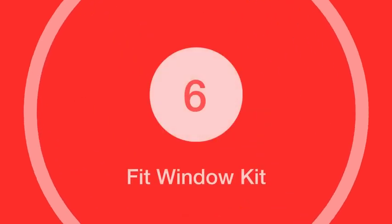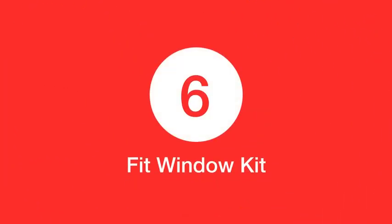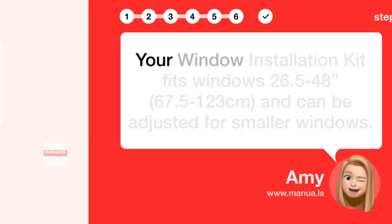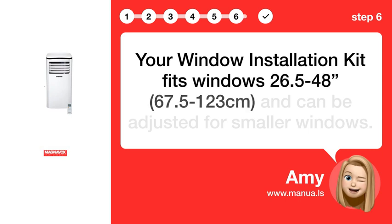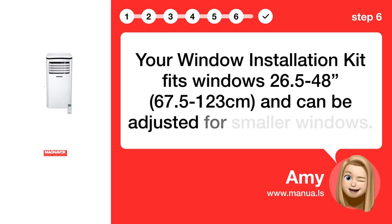Step 6: Fit window kit. Your window installation kit fits windows 26.5–48, 67.5–123 cm and can be adjusted for smaller windows.